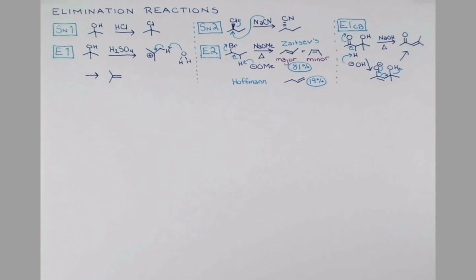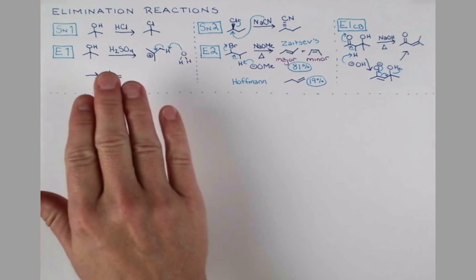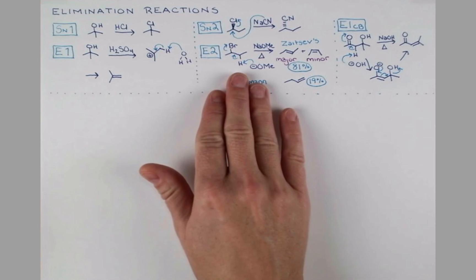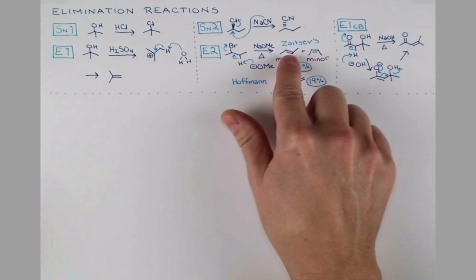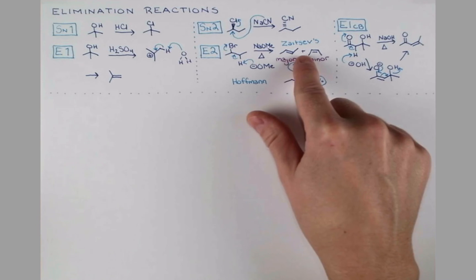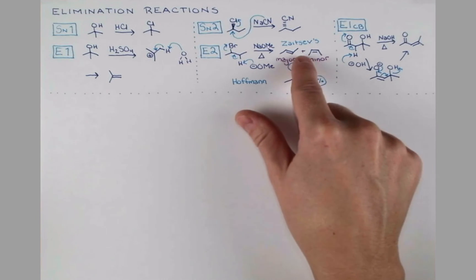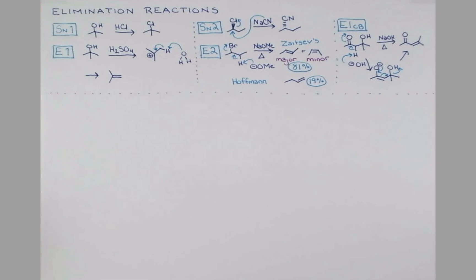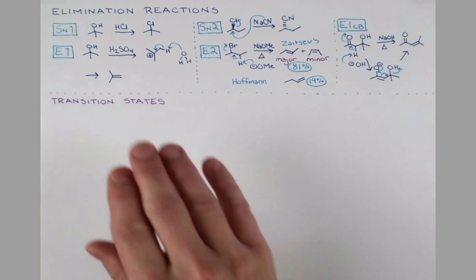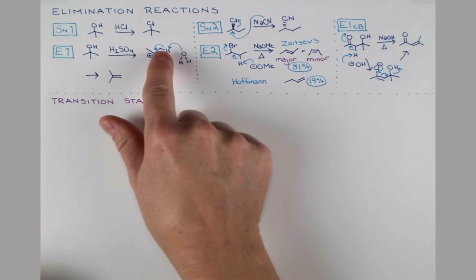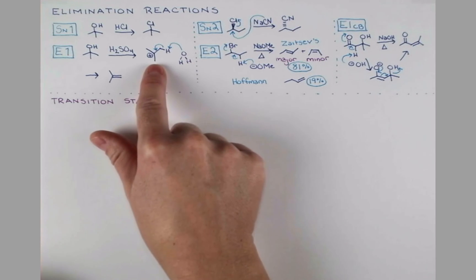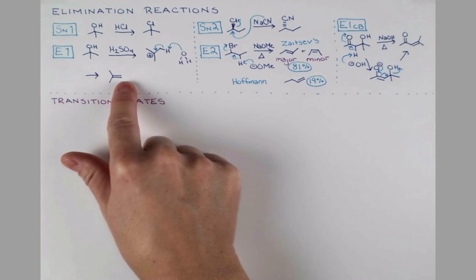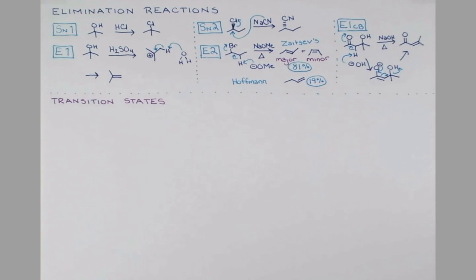I think E1CB is pretty easy to recognize because what you'll have is a leaving group, even a poor leaving group, two carbons away, usually from a carbonyl or some anion stabilizing group. But this is the really typical example that you'll probably need to know for undergraduate OCHEM. In both E1 and E2 reactions, the E alkene is favored, so with these groups on the opposite sides, not this Z product with the groups on the same side. We'll need to look at the transition states for these reactions to see why that is so.